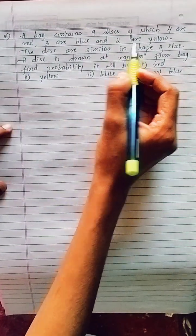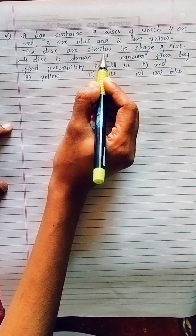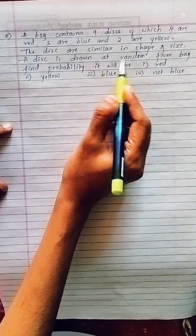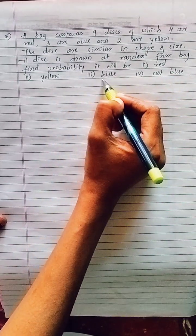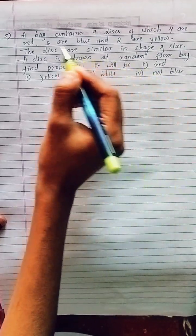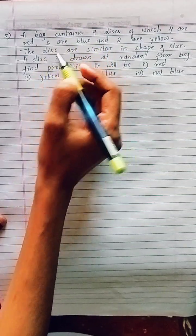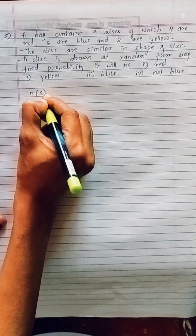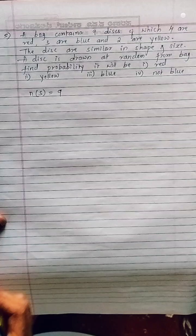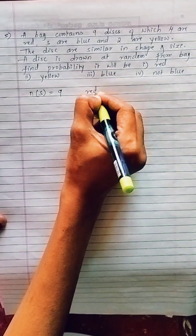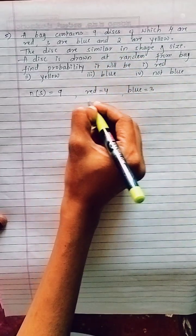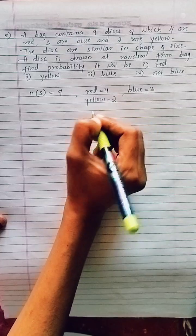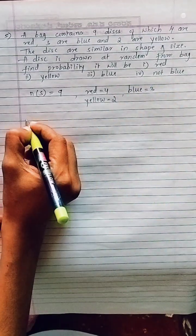The next question: A bag contains 9 discs of which 4 are red, 3 are blue, and 2 are yellow. The discs are similar in shape and size. A disc is drawn at random from the bag. Find the probability it will be: (i) red, (ii) yellow, (iii) blue, (iv) not blue. Total discs = 9.